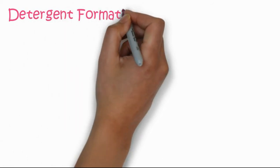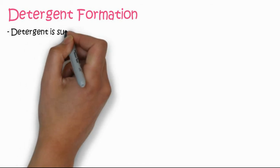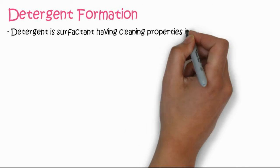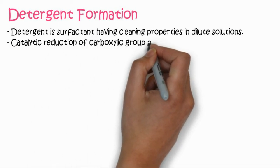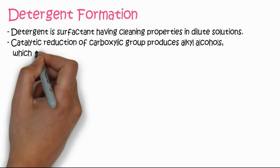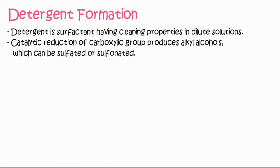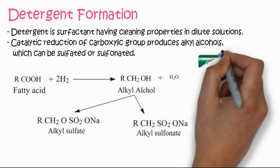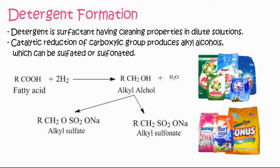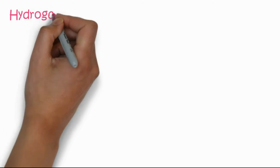Soap is not very effective for cleaning clothes, which is why we usually use detergents. The next reaction is detergent formation. Detergents are usually called surfactants; they have cleaning properties in dilute solution and are more catalytically active. They are formed by the catalytic reduction of the carboxylic acid group, producing an alkyl alcohol which is then sulfated or sulfonated to form alkyl sulfate, known as detergents.